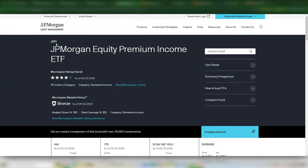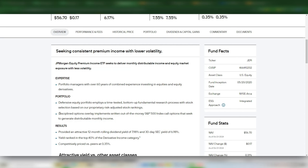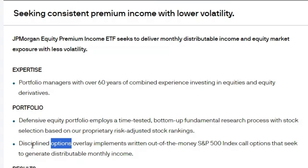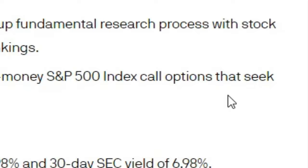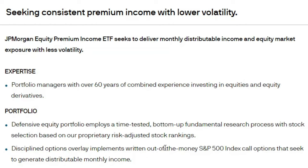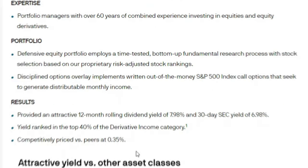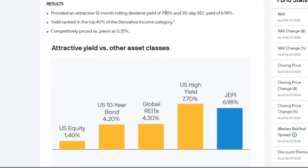One of my favorite ETFs is JEPI. It's a very low-risk way to get fairly decent dividend yield with a well-managed ETF. As with most income ETFs, JEPI uses some type of options contract to generate those high dividend yields. Specifically, a disciplined options overlay that writes out-of-the-money S&P 500 index call options to generate distributable monthly income. JEPI achieves around 7% to 8% yield over 12 months and has a very low expense ratio of 0.35%, the lowest of the three funds we'll look at today.